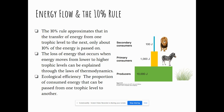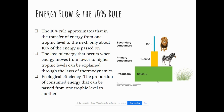Energy is lost as it moves through different trophic levels — some is lost to the environment as heat, or used up in different processes. An animal can't efficiently take up all of the energy that producers got from the sun, because some is used up in metabolic processes. Ecological efficiency is the proportion of consumed energy that can be passed from one trophic level to another. Some ecosystems may be more efficient than others.